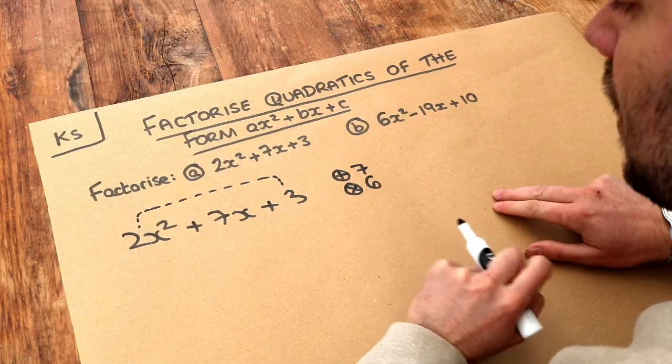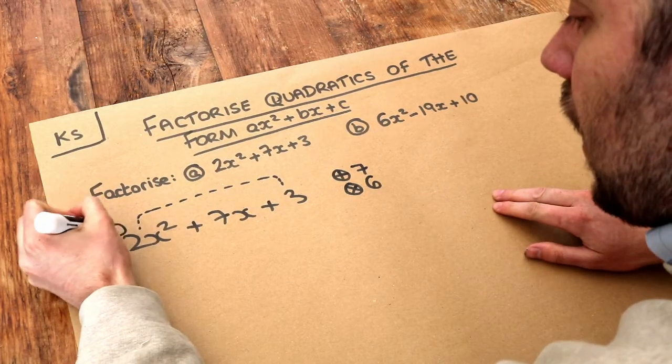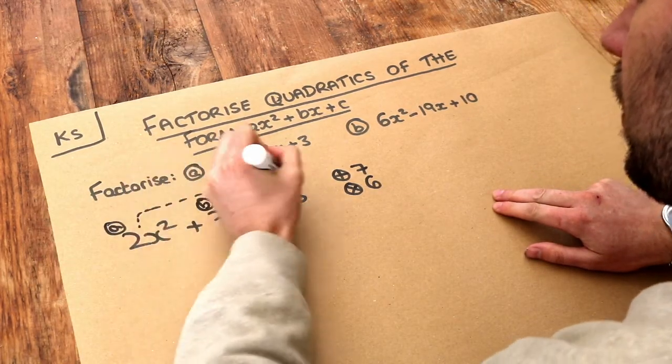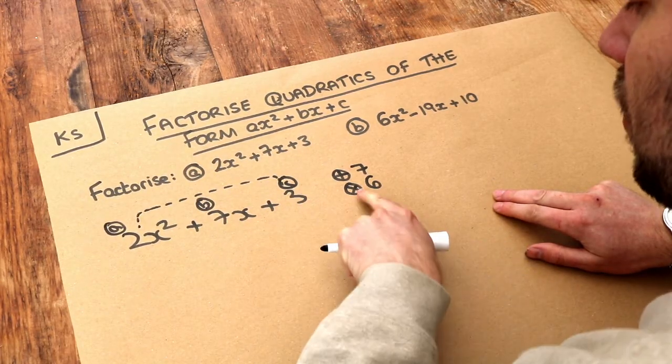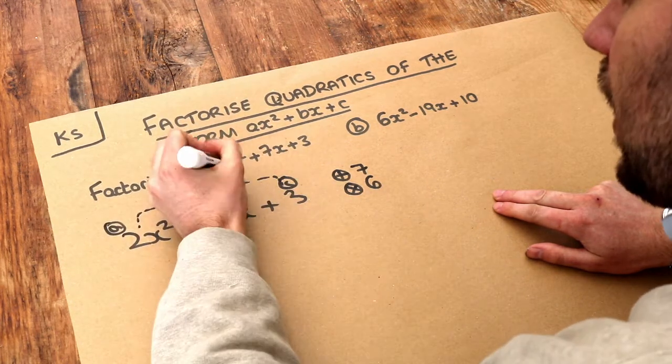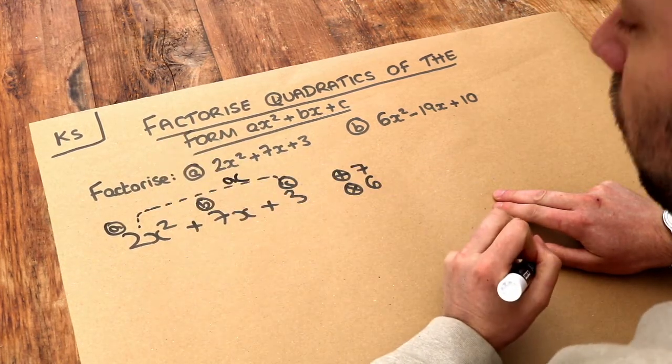Some teachers call this the AC method, because remember this is the A, this is the B, this is the C. So the A is 2, B is 7, C is 3. And we need two numbers that multiply to give A times C, or AC, and that's why they call it the AC method.